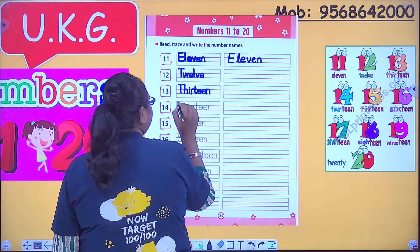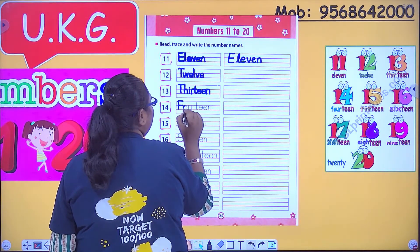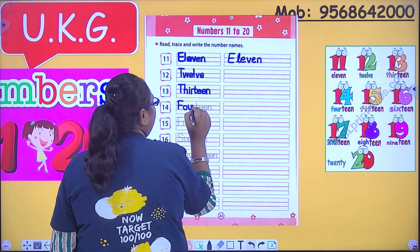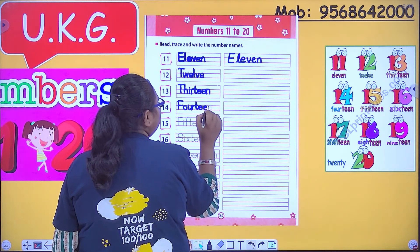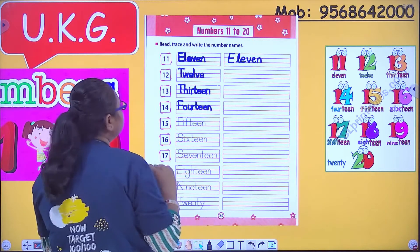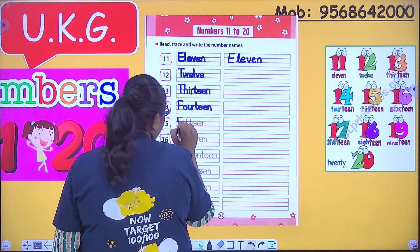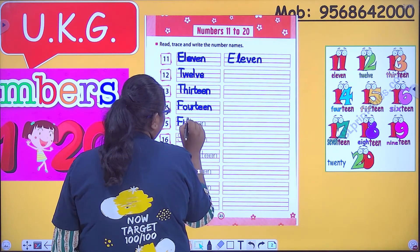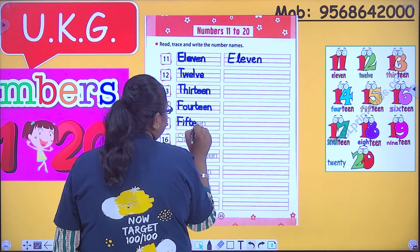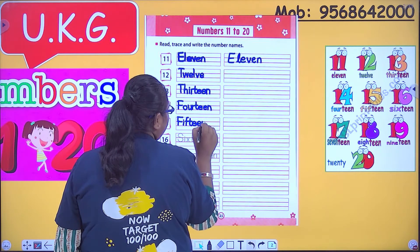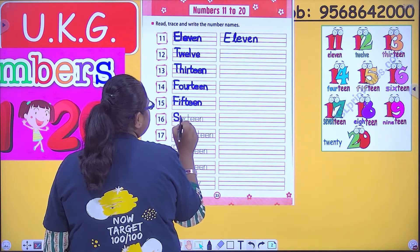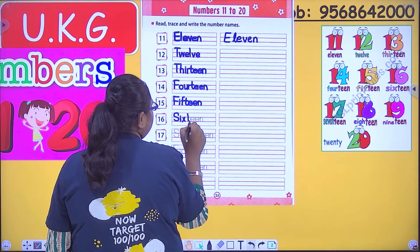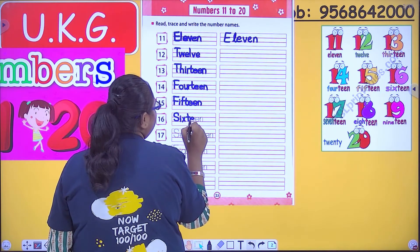14: F-O-U-R-T-E-E-N. 14. Next comes 15: F-I-F-T-E-E-N. 15. Next is 16: S-I-X-T-E-E-N. 16.